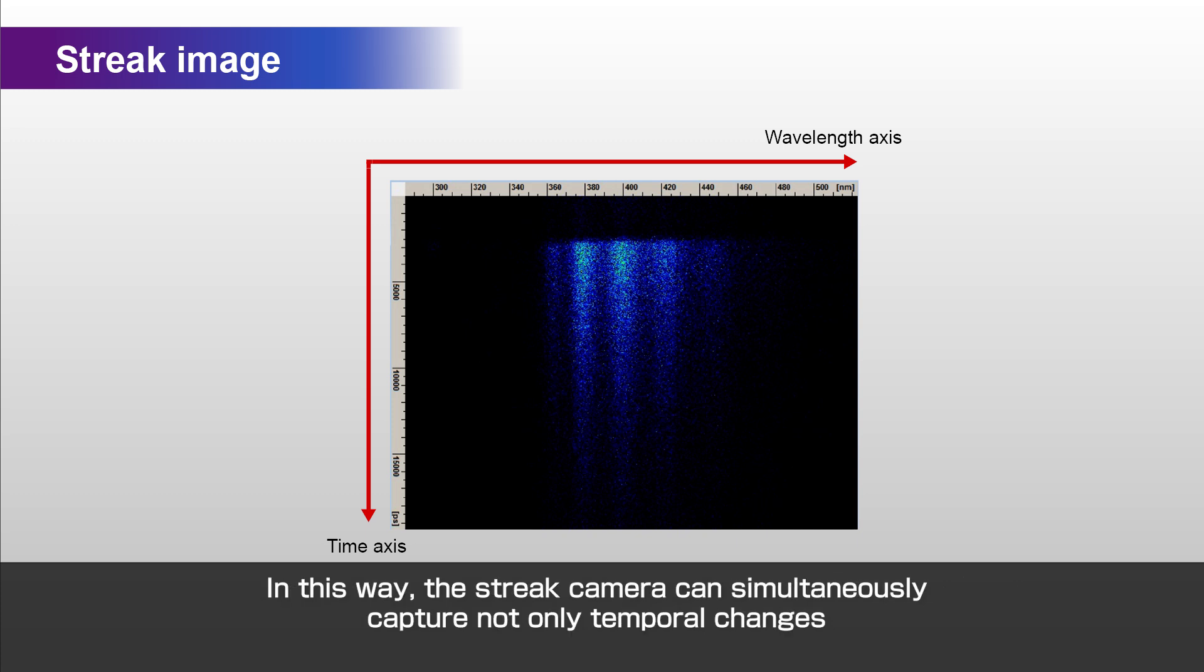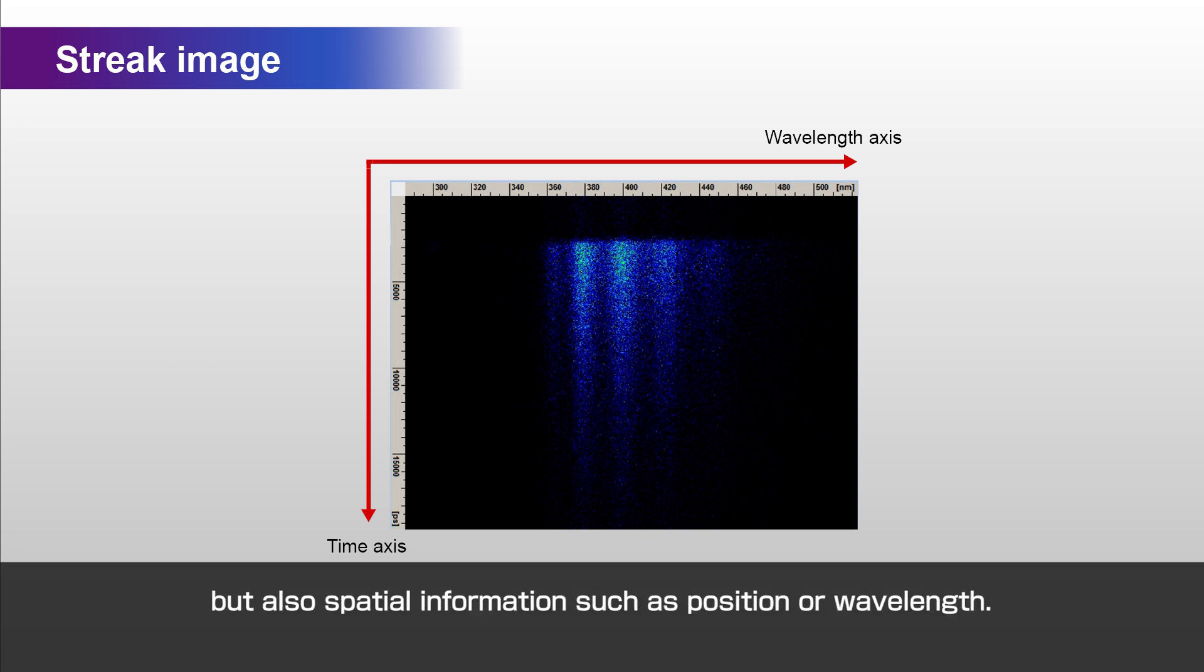In this way, the streak camera can simultaneously capture not only temporal changes, but also spatial information such as position or wavelength.